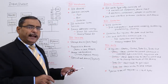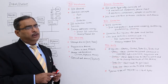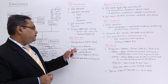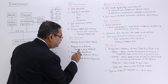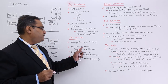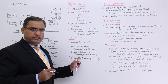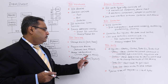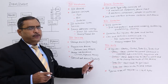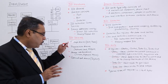I/O devices can be categorized mainly into four heads: storage devices like disks or tapes, which are block-oriented; transmission devices like network cards and modems; human interface devices like your screen (output), keyboard and mouse (input); and specialized devices like your joystick.